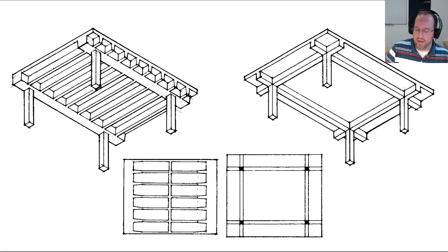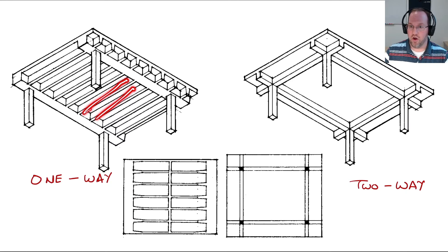Broadly speaking we can categorize two types of gravity system: the one-way system or the two-way system. In a one-way system we have joists that directly support our deck or floor, then we have girders that support those joists, and the girders rest on top of columns.